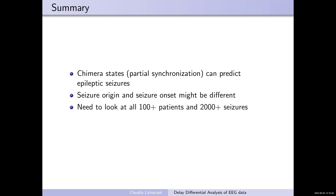In summary, you can identify a partial synchronization chimera state in the brain that can predict epileptic seizures. The seizure onset and the origin might be different. I'm now looking at over 100 patients with over 2000 seizures — lots of terabytes of data. DDA compresses the data, since I look only at the A1 coefficient, giving a much smaller feature space than the original data. For a patient with two weeks of recording at 500 Hz and 150 channels, I can process it in a day.